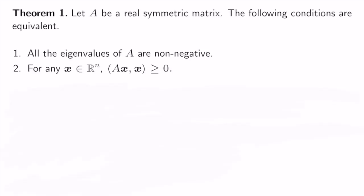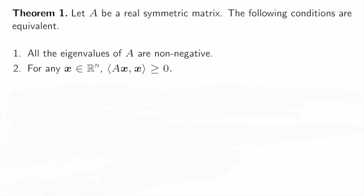Here is our first theorem. Let A be a real symmetric matrix. Then these two conditions are equivalent. First, all the eigenvalues of A are non-negative. Second, for any vector x, the inner product of Ax and x is greater than or equal to zero. Based on this theorem, we define a positive semi-definite matrix as a matrix that satisfies these conditions.